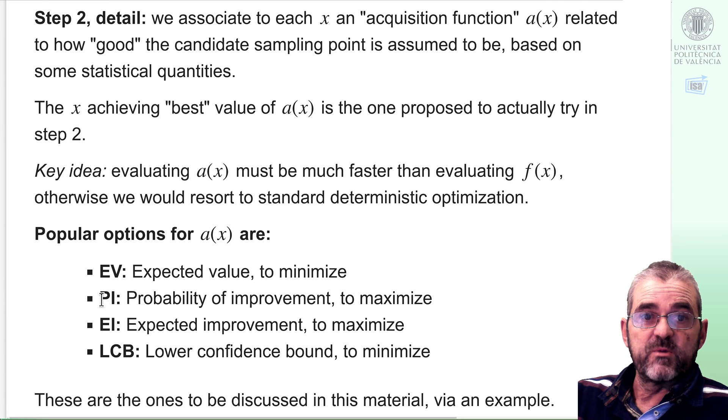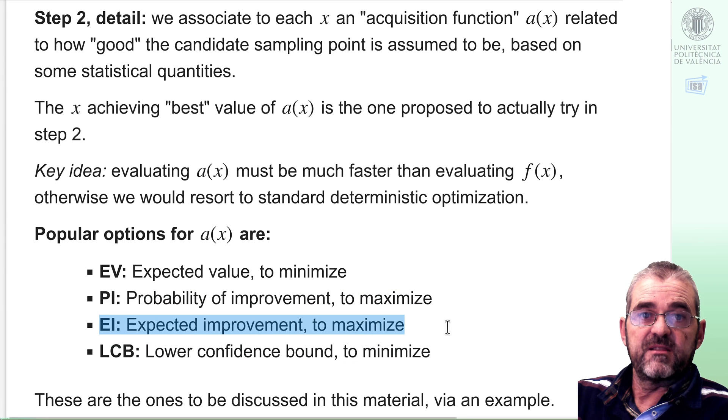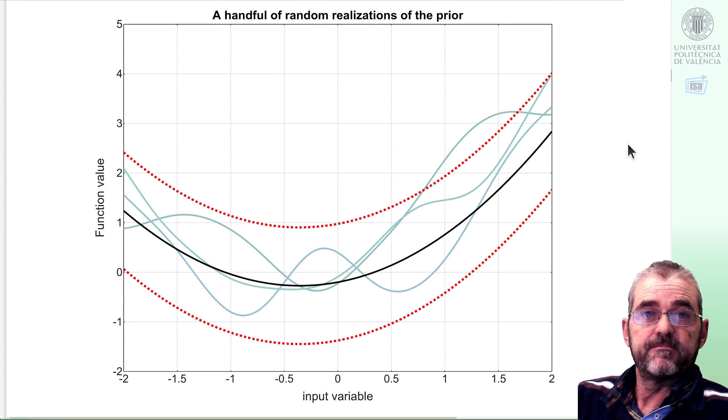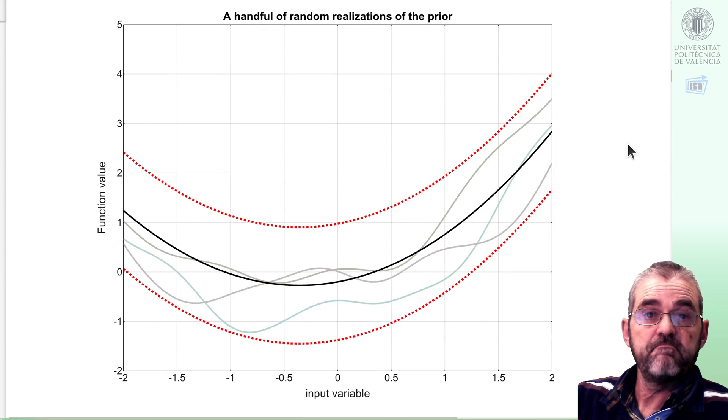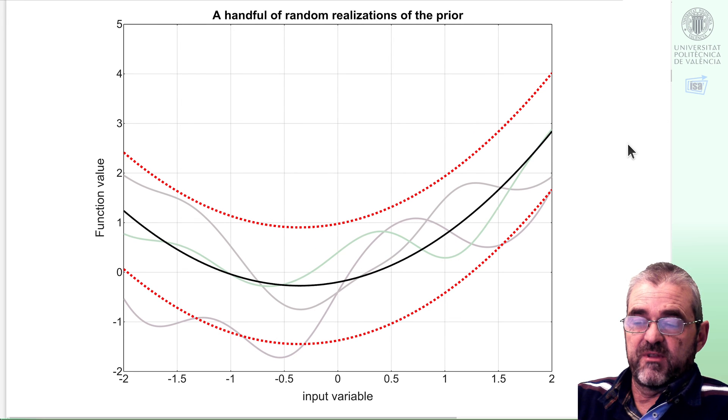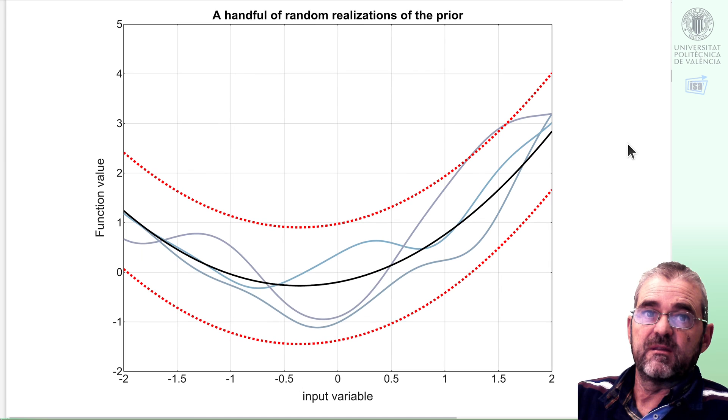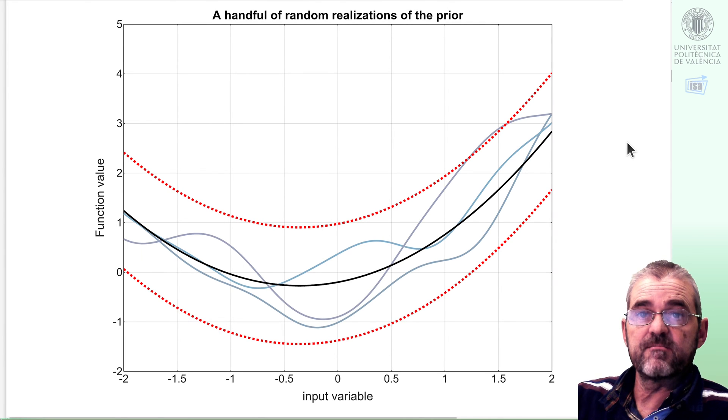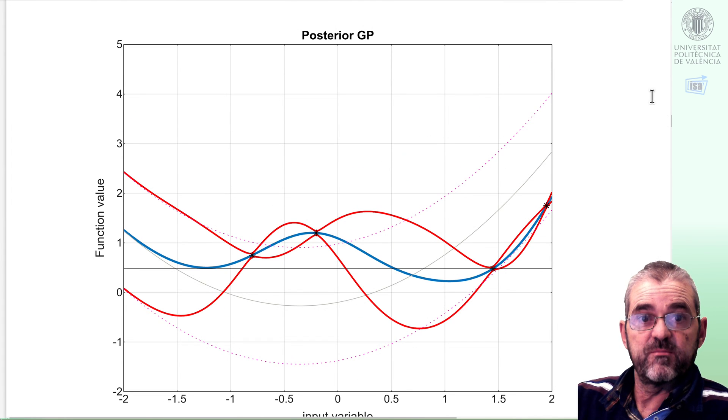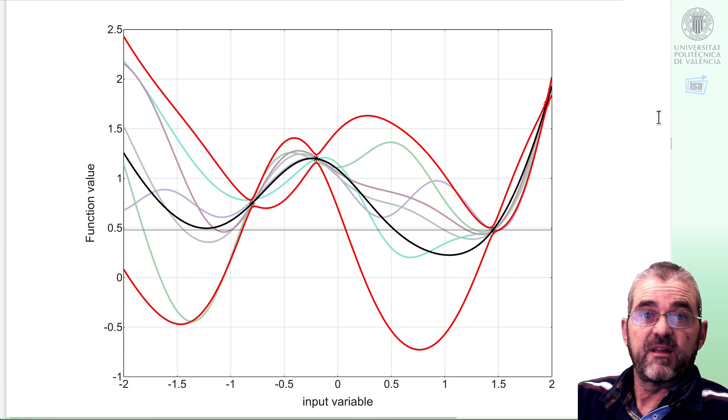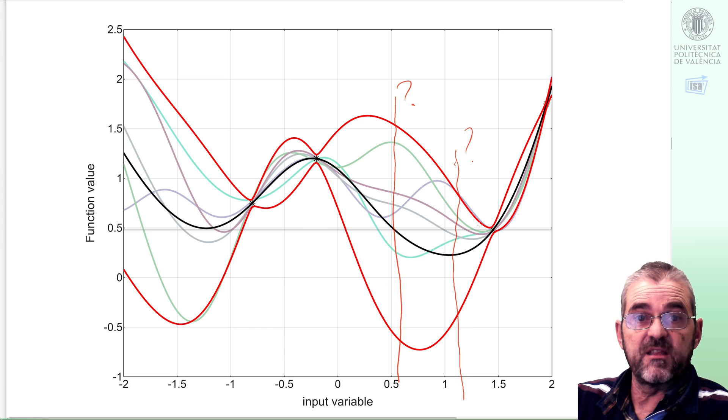Popular acquisition functions are these ones here. In a previous video, we discussed the meaning of probability of improvement, and in here, we will discuss the meaning of expected improvement. We had a prior with mean in black, confidence intervals in red, and some example functions from that prior.